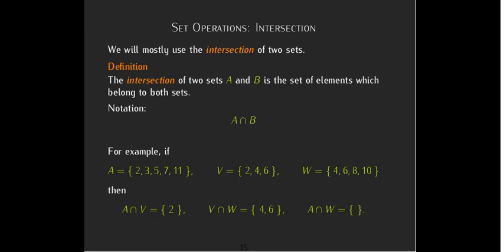So if I want to look at A intersection V, or the intersection of A and V, what do they have in common? The only thing they have in common is 2.